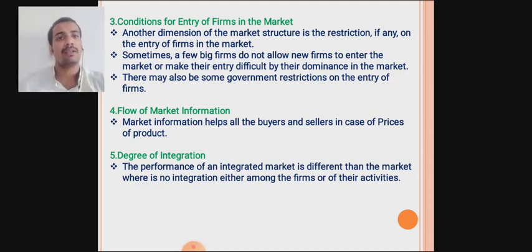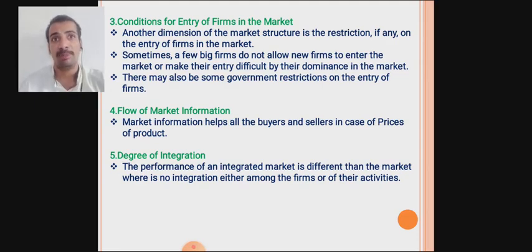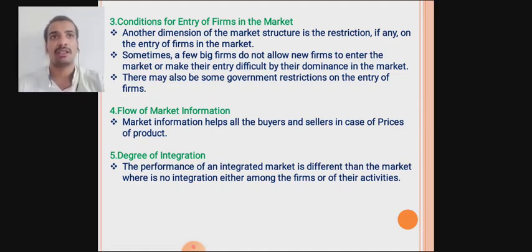The third component is conditions for entry into the market. Day by day, new firms are entering markets and competition is increasing. There are some conditions and restrictions for the entry of new firms. Sometimes big firms do not allow new firms into the market, or make their entry difficult through their dominance. Dominant firms or groups of dominant shops restrict new entrants because increased competition would hamper their profits.